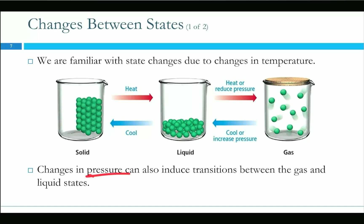We can also use pressure to induce transitions between gas and liquid states. If you reduce the pressure enough — this is why if you've ever been camping at high altitude, it takes a lot longer to cook pasta. Water boils at a lower temperature at high altitudes. On the back of any pasta package, it almost always says to add salt to the water, because it increases the boiling temperature just a little bit.